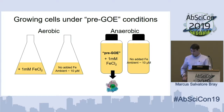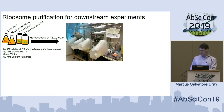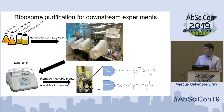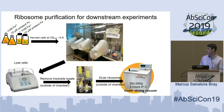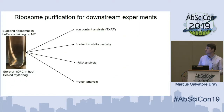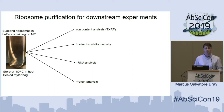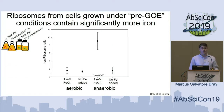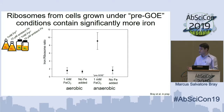We grew the cells under those growth conditions, and then in an anoxic chamber to keep everything O2-free, I lysed the cells, purified out the ribosomes using a chromatography-based method, and concentrated the ribosomes using ultracentrifugation, then was able to do some downstream analysis. We'll first look at the iron content analysis, which we measured using total X-ray fluorescence spectroscopy. From that method, you get an iron concentration in your sample, you know the ribosomal concentration, and from that we calculate an iron-per-ribosome ratio.